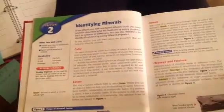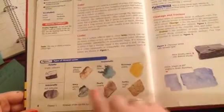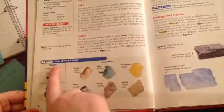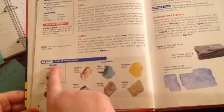Different types of lusters are shown in Figure 1. So this is really going to help you. You're going to need to know the different types of mineral luster: metallic, submetallic, and non-metallic.